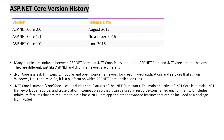If you look at the history of ASP.NET Core: version 1.0 was released in June 2016, version 1.1 was released in November 2016, and 2.0 is the latest, released in August 2017. Many people are confused between ASP.NET Core and .NET Core — please note that ASP.NET Core and .NET Core are not the same. They are different, just like ASP.NET and .NET Framework are different.